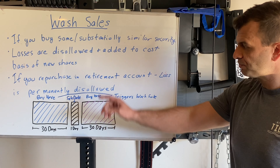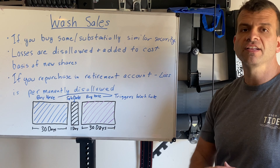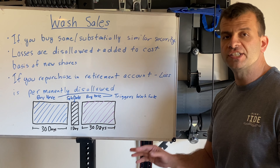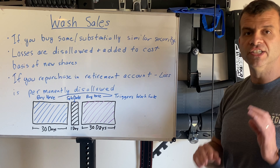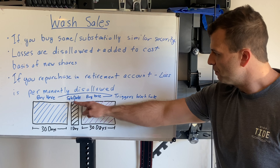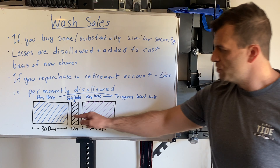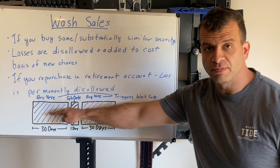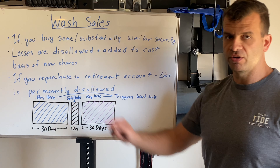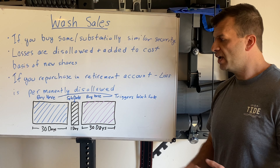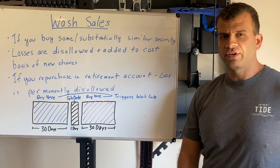Let me break it down with this diagram. This is the date that you sold the stock at a loss. For clarification, if you sell it for a gain, none of this applies — it only applies if you sell at a loss. If you had bought the stock 30 days before or 30 days after this sale date, that's where you'll get caught in a wash sale. Anytime outside of that window, you're okay.